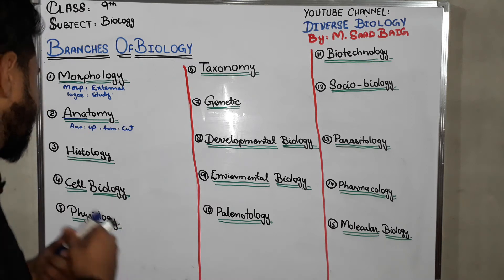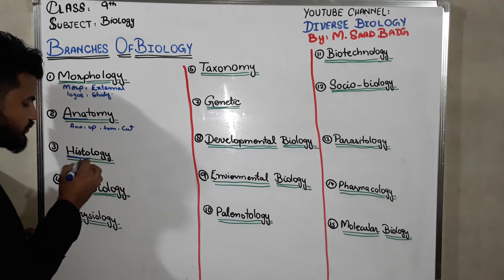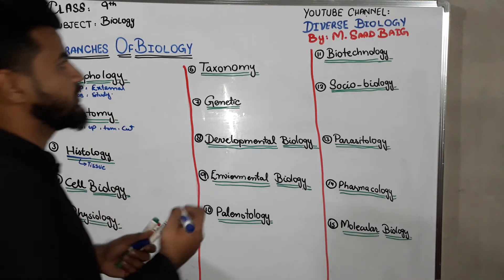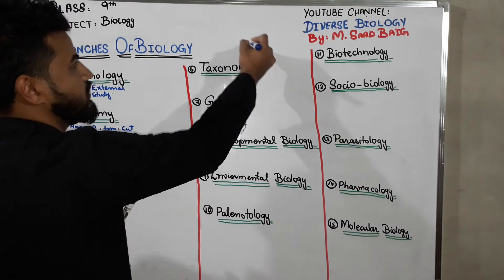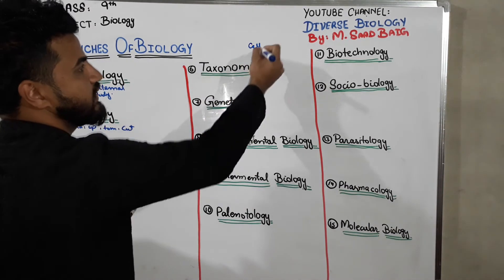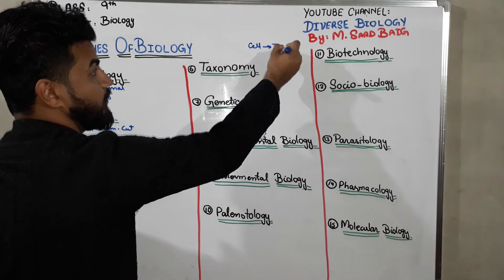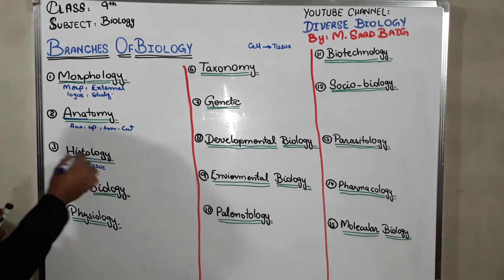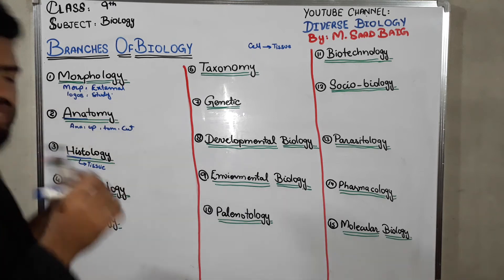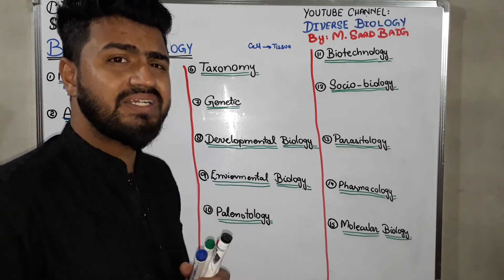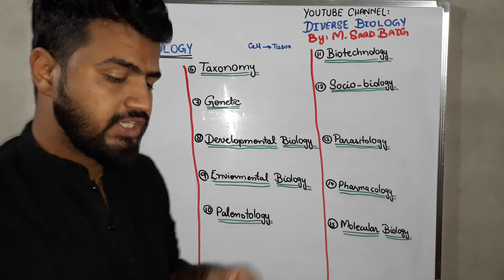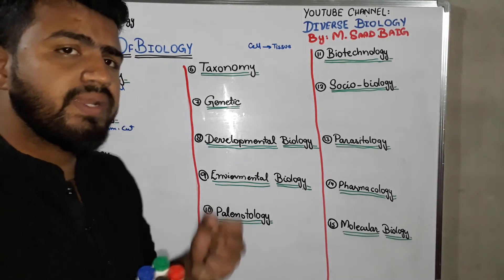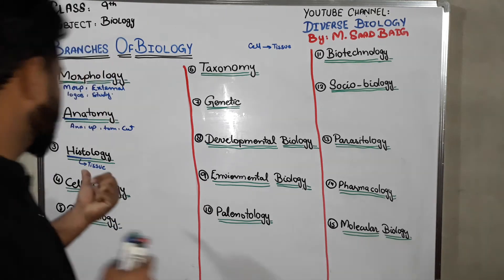After that we have histology. In histology, 'histo' stands for tissue. Now, life started from cells, and when cells combine together, that combination of cells is called tissue. So histology is the study of tissue — its structure and its function. We discuss what the structure of any tissue is, what its function is, how it performs its function, and its mechanism. That is known as histology.